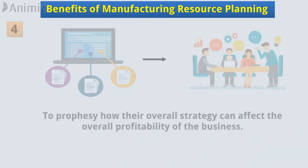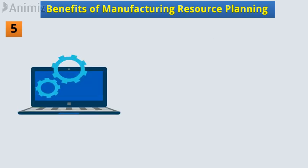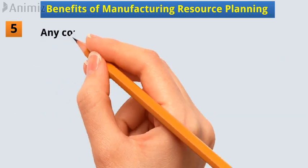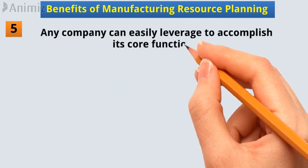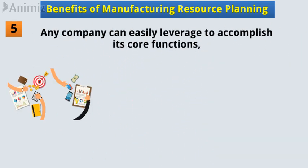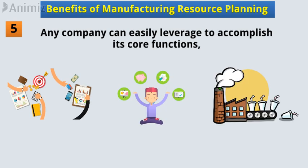The automated system of MRP2 provides more powerful and detailed information that any company can easily leverage to accomplish its core functions, such as planning, effective decision making, and production.